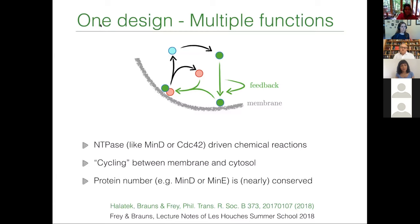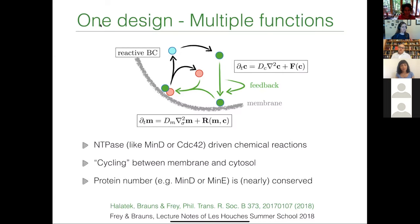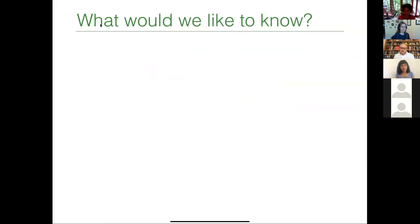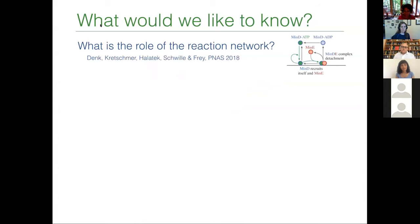This is roughly the idea behind all these patterns from a conceptual point of view. If you want to analyze that in terms of math, you have to write down diffusion-reaction equations — one for the membrane, one for the cytosol — and you also have a reactive boundary condition that couples the membrane dynamics as things attach or detach from or to the membrane from the cytosol. One key question, which will be a focus today, is what is the role of the specific chemical reaction network underlying the system?